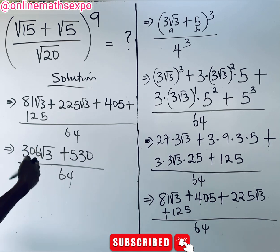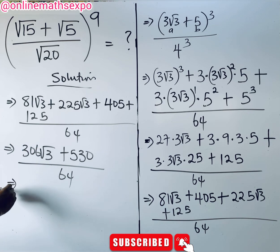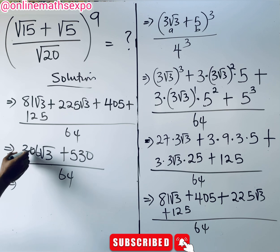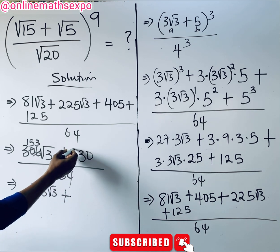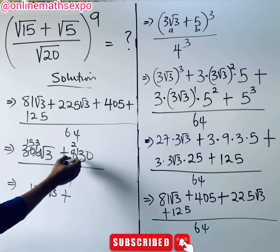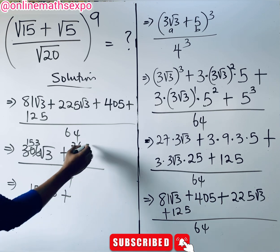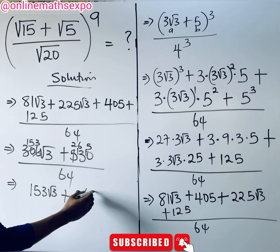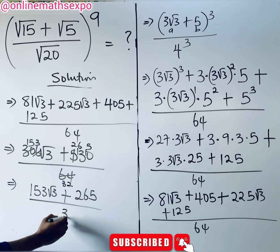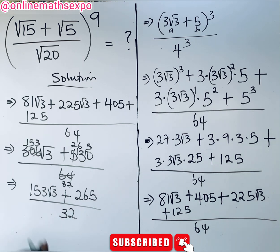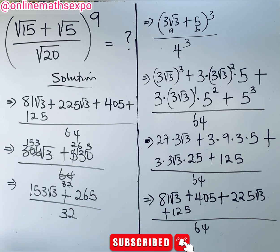We check if we can simplify further with 2, but 153, 265, and 32 — 153 and 265 are odd, so 2 cannot divide them further. This is the lowest form, and this becomes the final answer.